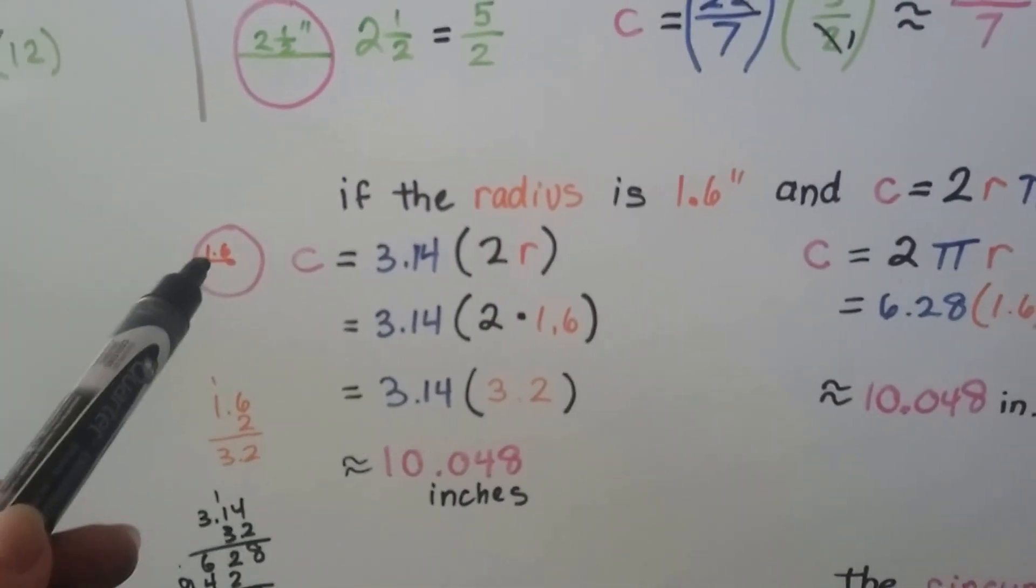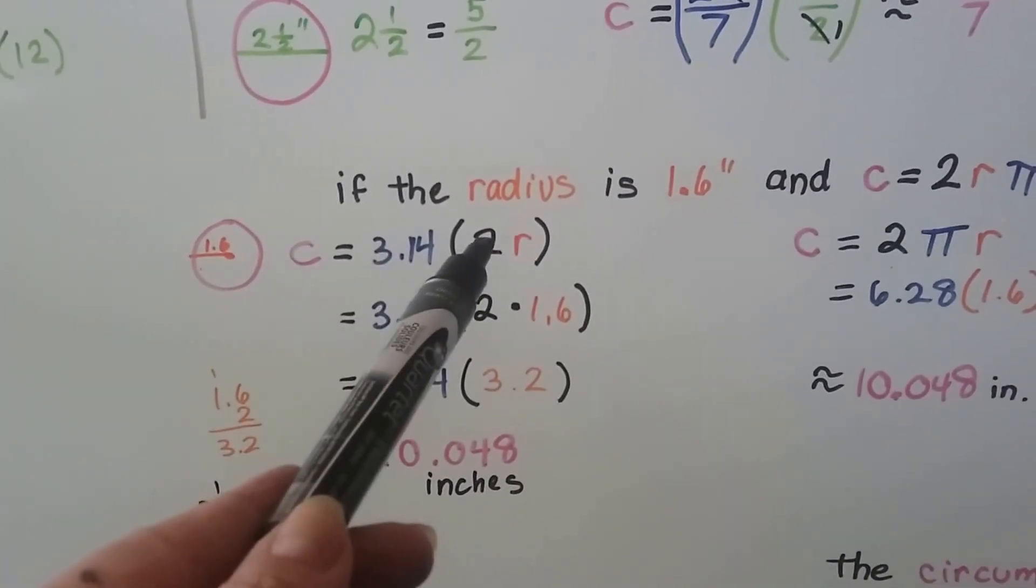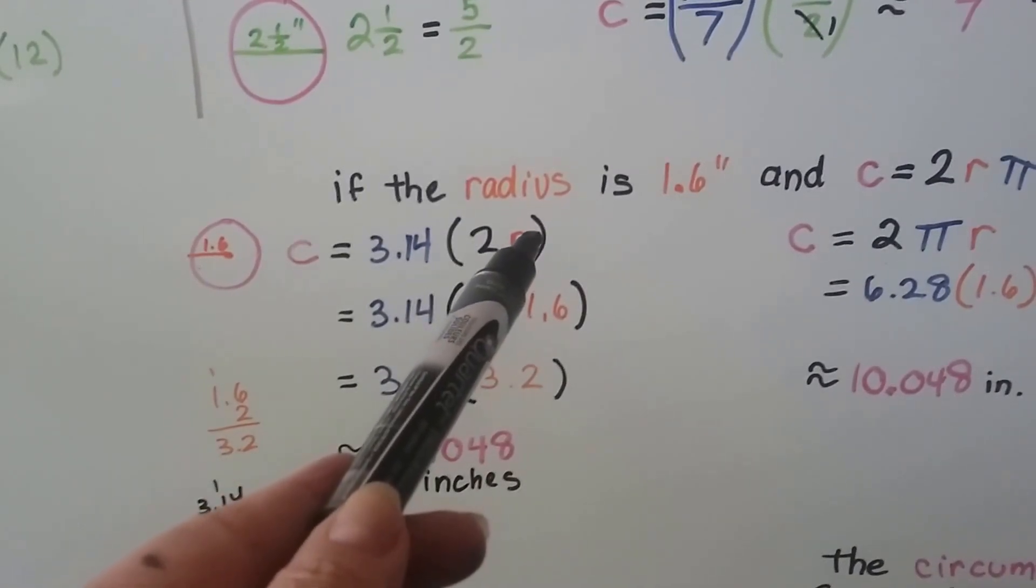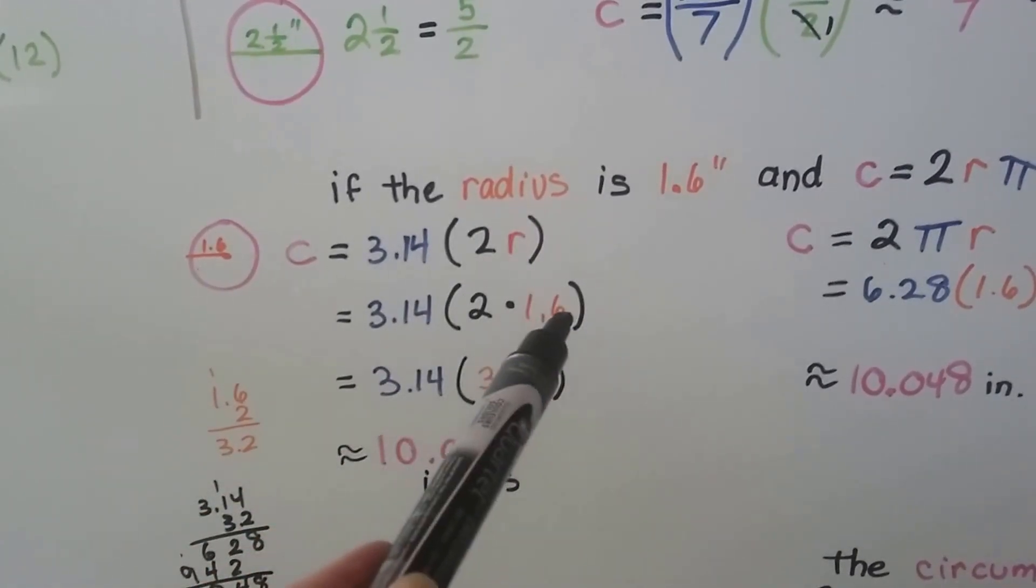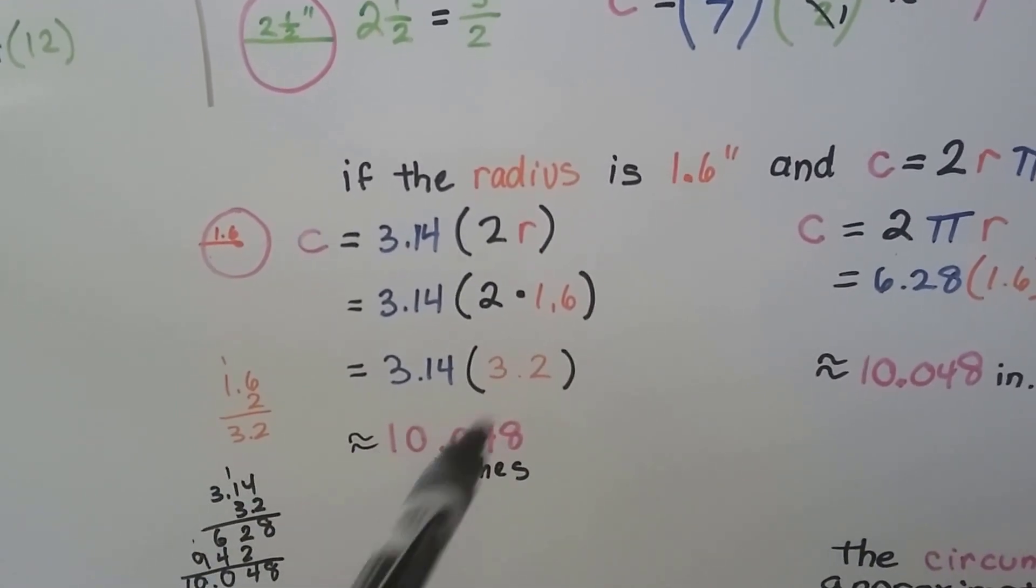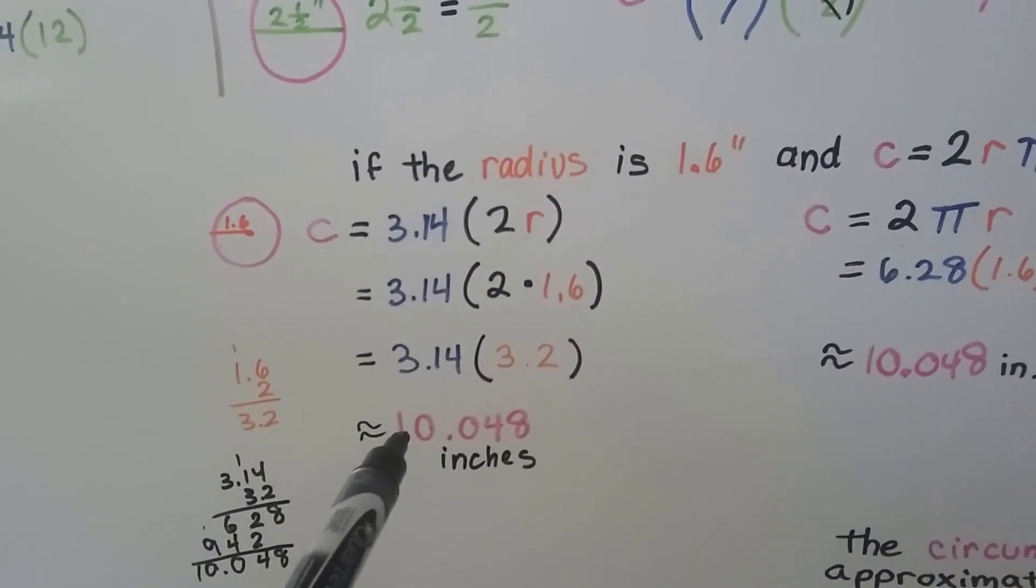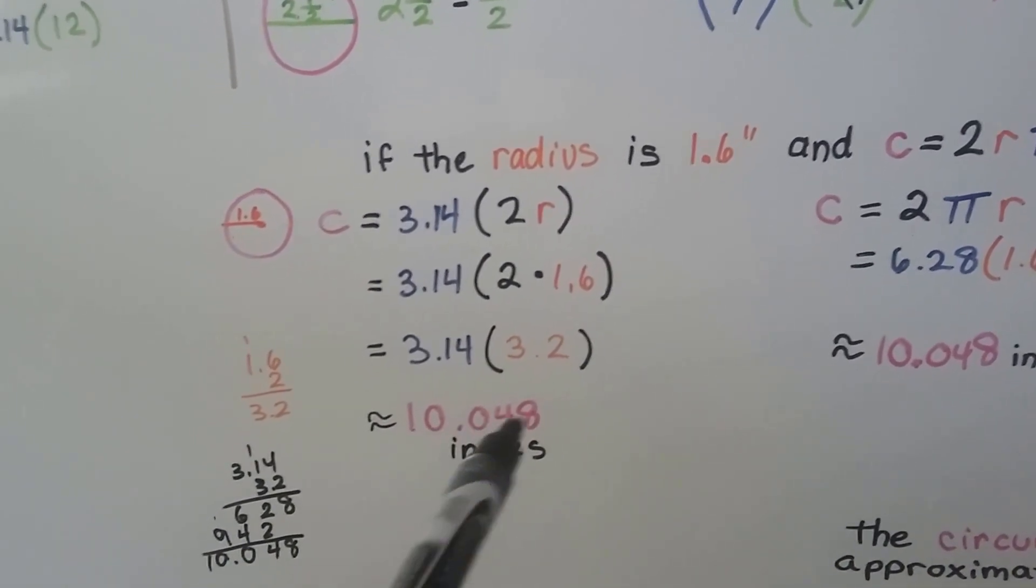What we can do is, we've got this 1.6 radius. We can multiply 3.14 times 2 of the radii. So 2 times 1.6 is 3.2. That would give us, when we multiply it to the approximation of pi, approximately 10.048 inches.